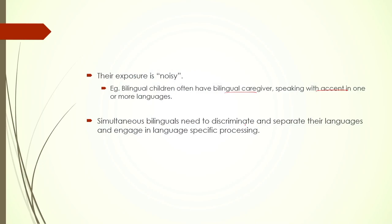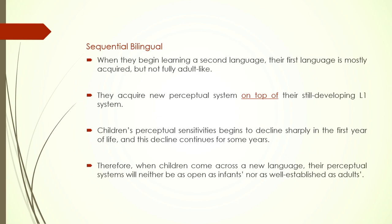Simultaneous bilinguals need to discriminate and separate their languages and engage in language-specific processing gradually. On the other hand, sequential bilinguals learn their L2 after their L1 — so they have an L1 and L2 as opposed to both L1s in the case of simultaneous bilinguals. In sequential bilinguals, when you are learning your L2, your L1 is already in place. In terms of phonological awareness, they have already established the phonological awareness of the contrasts of their L1, and on top of that they are now learning the L2 phonological properties.